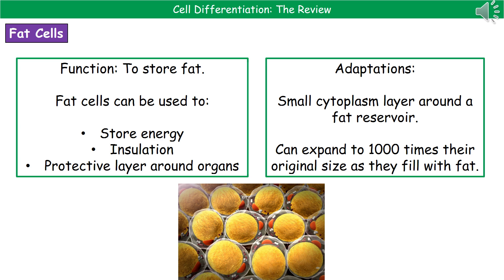Fat cells have certain adaptations that allow them to carry out these roles. First of all, they've only got a very small cytoplasm layer around a fat reservoir — that yellow section you can see in the diagram is the giant fat reservoir. Their other key feature is that they are capable of expanding, and not just a little bit. They expand up to a thousand times their original size as they fill with fat, which is why eating a lot of junk food causes us to get bigger.